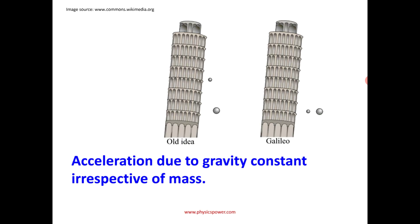The next major point: in front of many people, acceleration due to gravity is a constant value. The old idea was that the two bodies dropped from the same height — the heavier body is the first to reach the surface, and the lighter body is slower to reach the surface.